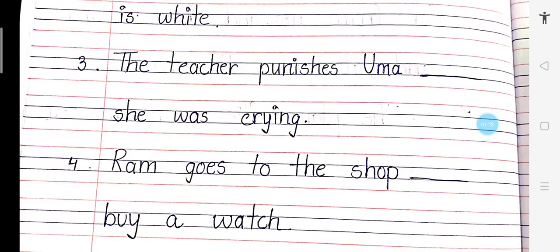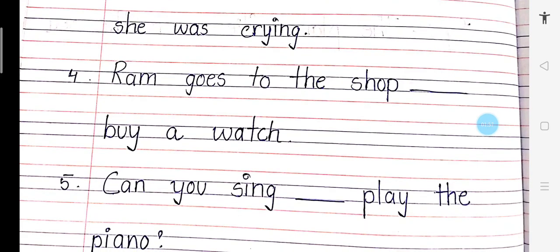Number 3: The teacher punishes Uma and she was crying. Number 4: Ram goes to the shop, dash buy a watch. Ram goes to the shop and buy a watch.